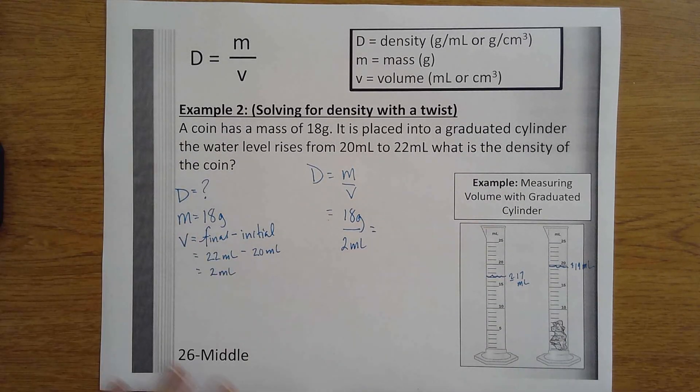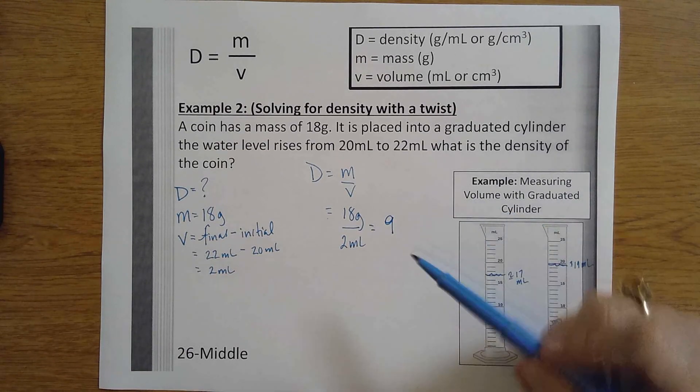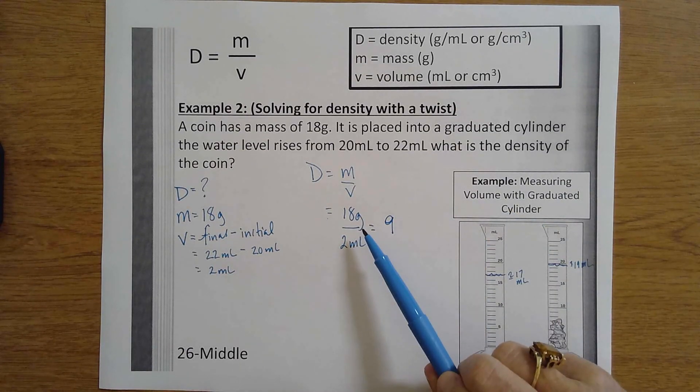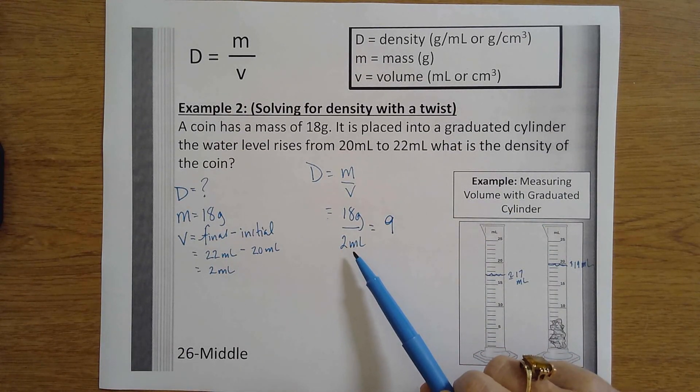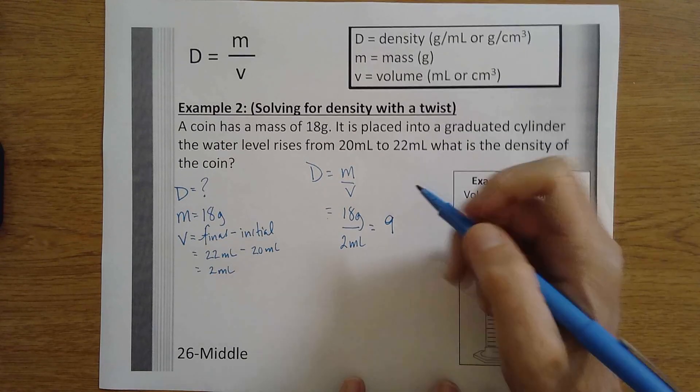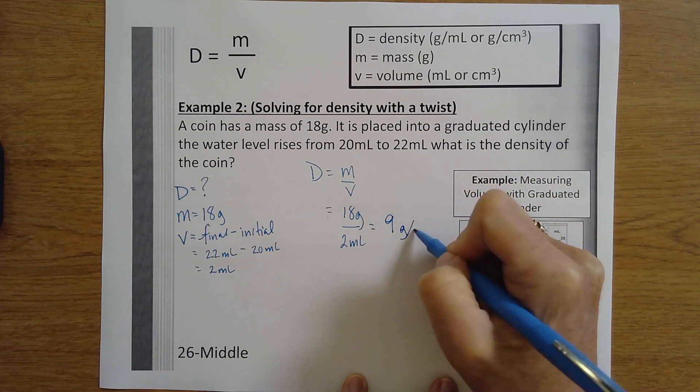And that is 9. My top number has two significant figures and my volume has one, so I can only report one, and then I carry the units grams per milliliter.